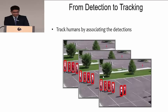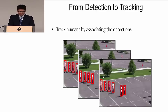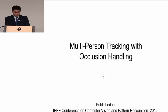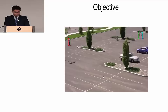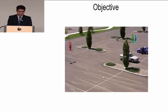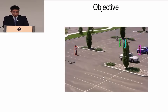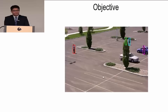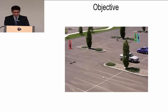Now, given the detections, we can track humans by associating them. I am going to talk about the second piece of my work: multi-person tracking with occlusion handling, which is published in CVPR 2012. This video shows the objective of the tracking task — each person is labeled in a different color. We need to track multiple persons, maintain their identities, and handle occlusions.